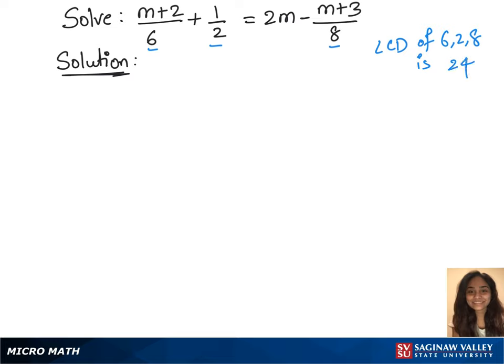In the first step, multiply 24 on both sides of the equation. So 24 times m plus 2 by 6 plus 1 by 2 equals 24 times 2m minus m plus 3 by 8. Apply the distributive property.